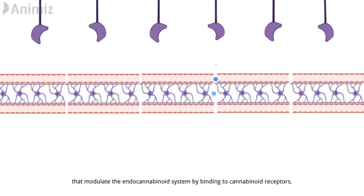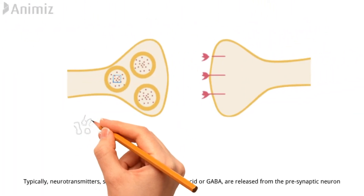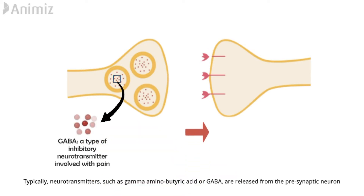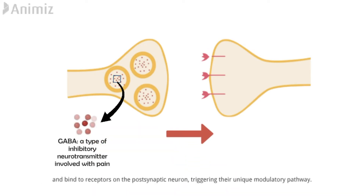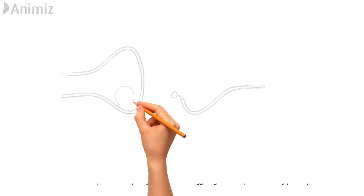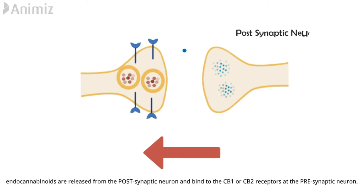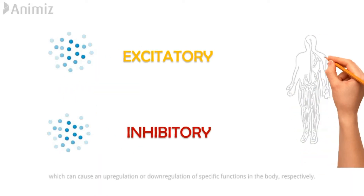Typically, neurotransmitters such as gamma-aminobutyric acid, or GABA, are released from the presynaptic neuron and bind to receptors on the postsynaptic neuron, triggering their unique modulatory pathway. The endocannabinoid system is different, as it is a retrograde system, which means endocannabinoids are released from the postsynaptic neuron and bind to the CB1 receptors on the presynaptic neuron. This binding event causes the release of excitatory or inhibitory neurotransmitters.